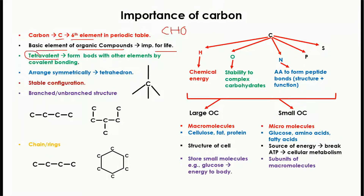Carbon is tetravalent. The word 'tetra' means four and 'valent' means valency — it means carbon has four valencies, or in other words, it can form four bonds with other elements by covalent bonding. Here you can see this is carbon, forming four bonds: one, two, three, and four.